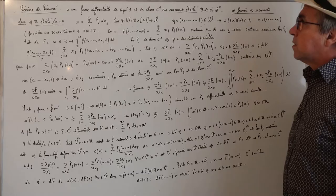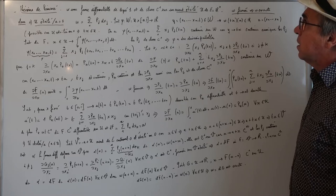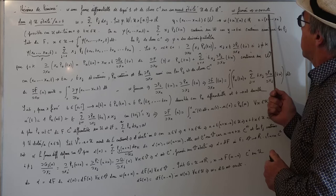Théorème de Poincaré : soit ω une forme différentielle de degré 1 et de classe C1 sur un ouvert étoilé U de E = Rⁿ. Alors ω fermée implique ω exacte.